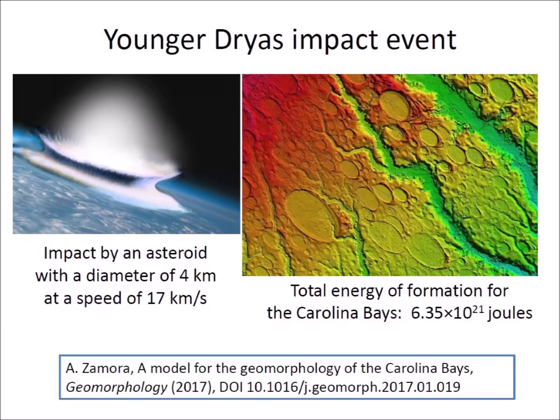From the number of bays and their energy of formation, it is possible to estimate that the total energy of the secondary impacts was approximately 6.35 × 10²¹ joules. This provides a rough lower limit of the kinetic energy transferred to the ejecta by the extraterrestrial impact. If an equal amount of energy was converted to heat, the size of the extraterrestrial projectile can be estimated as equivalent to an asteroid with a diameter of 4 kilometers traveling at a speed of 17 kilometers per second.